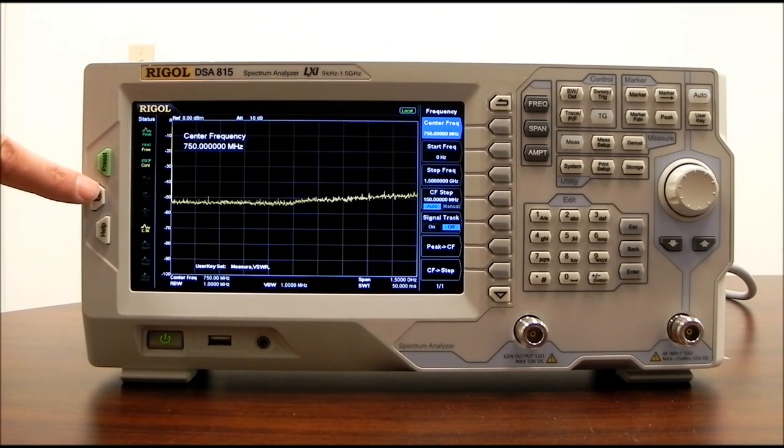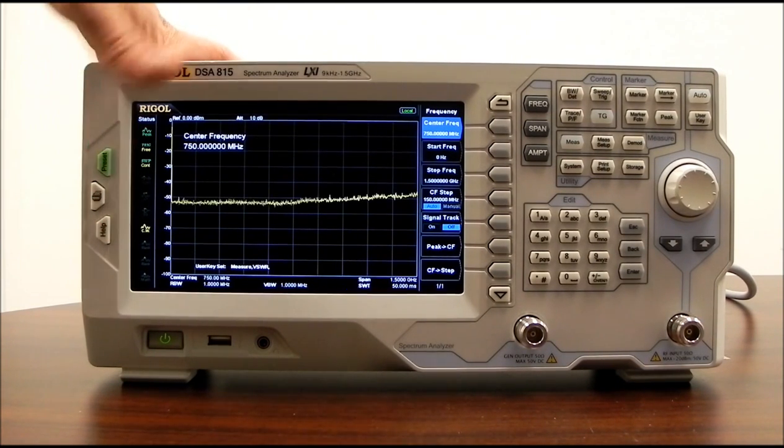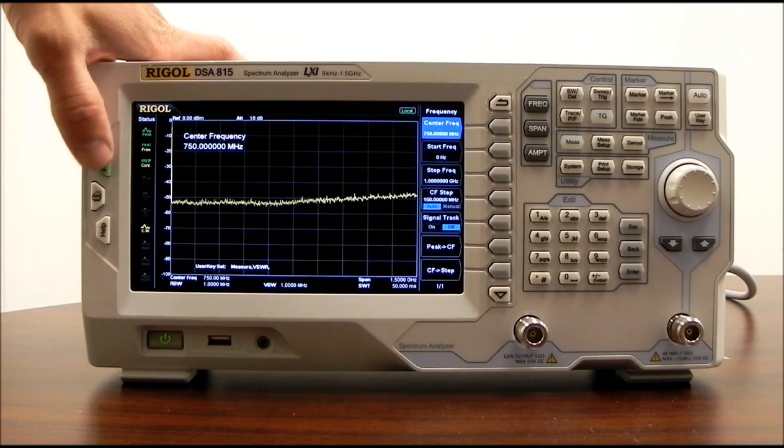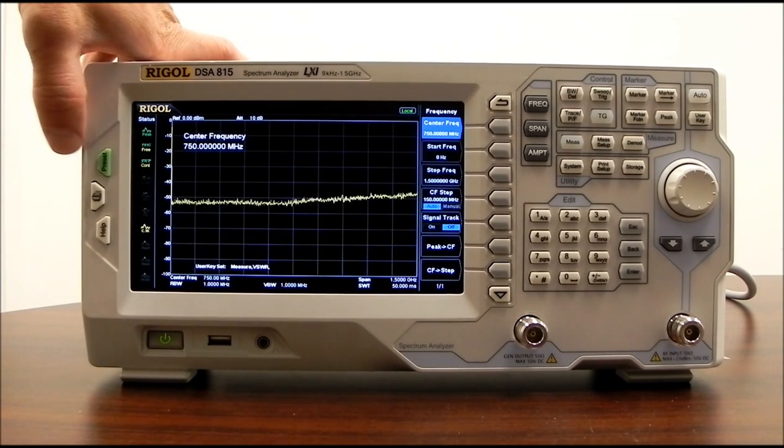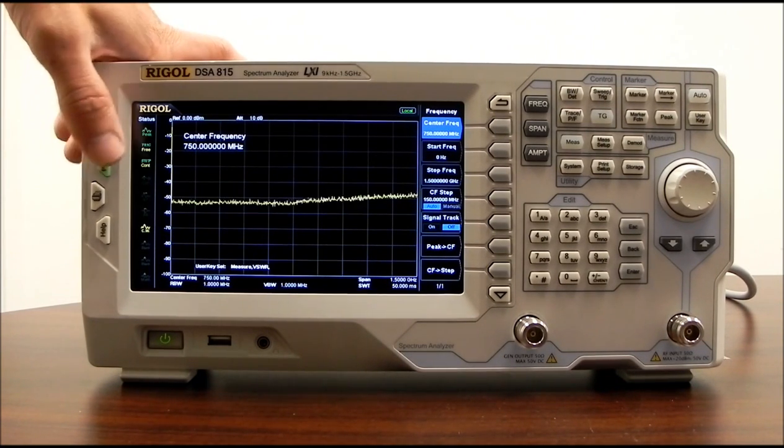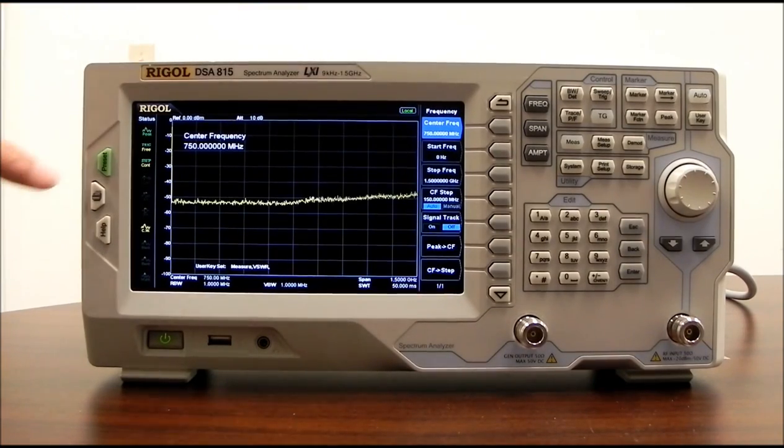We have a help key. We have a print key and a preset. Preset gets us back to whatever conditions we program that preset key for. It can be very helpful. In this case, I have it set to factory defaults. So by pressing it, I go back to factory defaults.